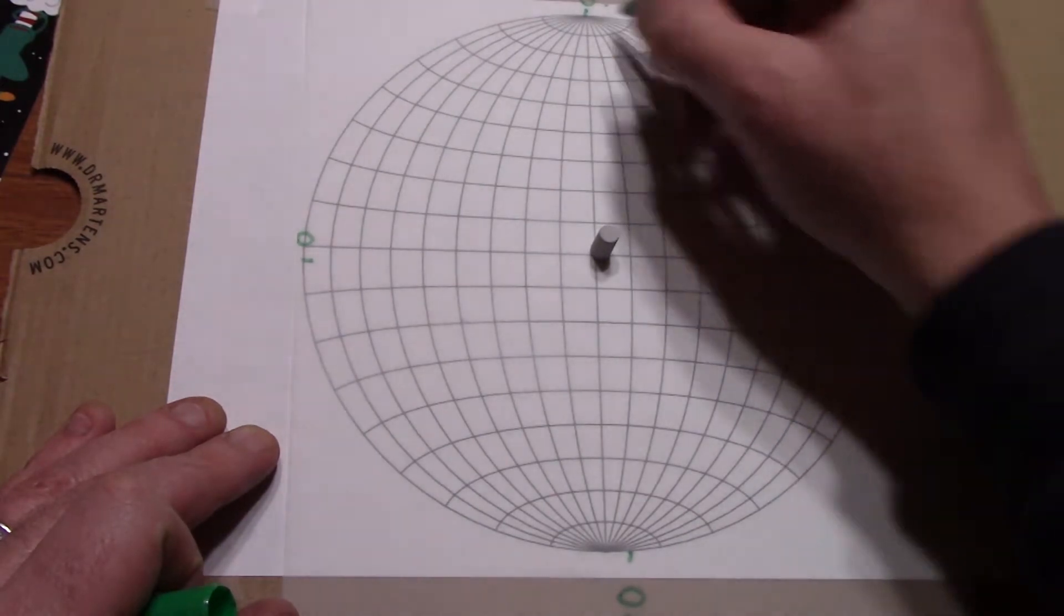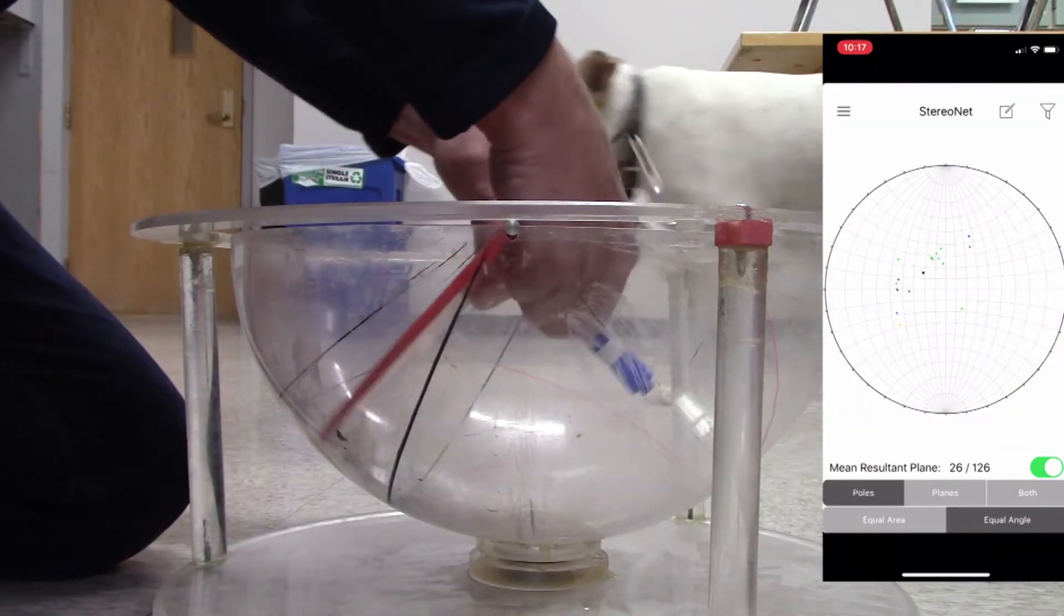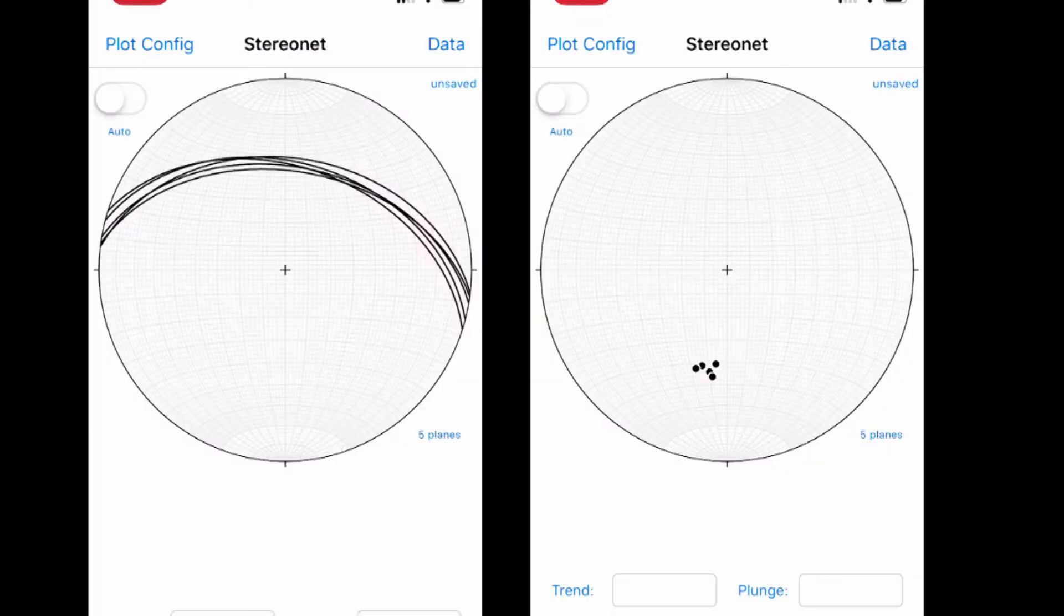Welcome back geology fans. We saw how to plot planes and their poles on stereo nets in the last episode, and played around with some tilted and folded structures.